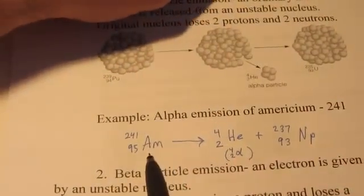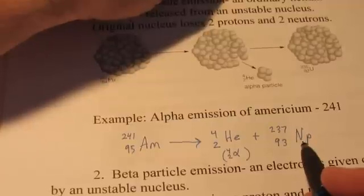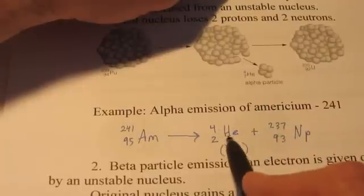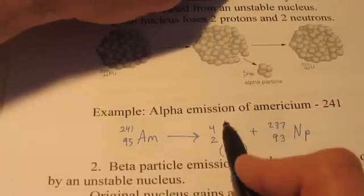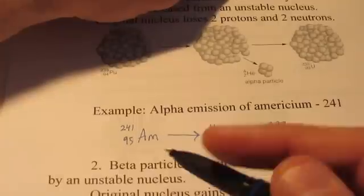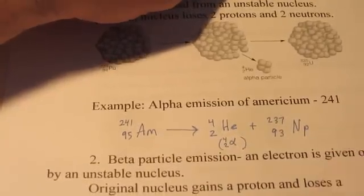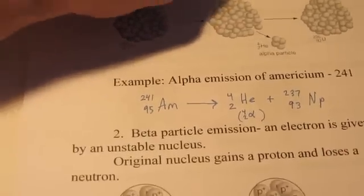So americium will transmutate by giving off an alpha particle into neptunium-237. Now you can see why these particles are so large and why their penetrating ability is so poor, because they have a mass of 4. They're much larger. And then what we end up with when beta and gamma emission occurs. In fact, let's talk about beta next.